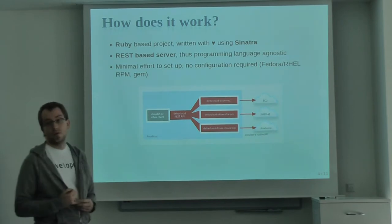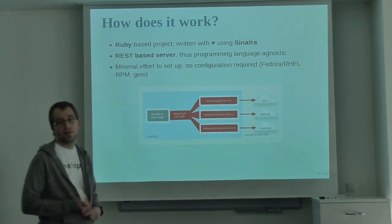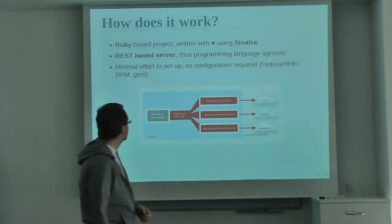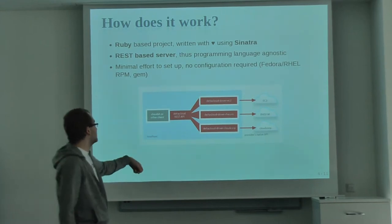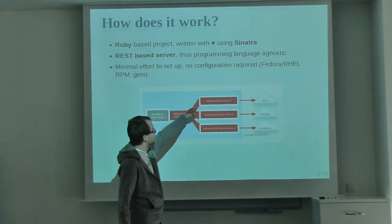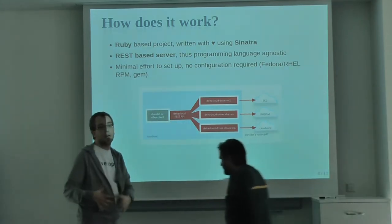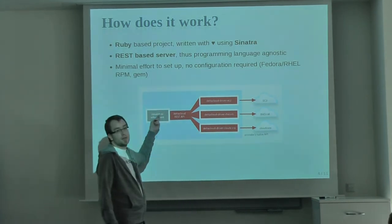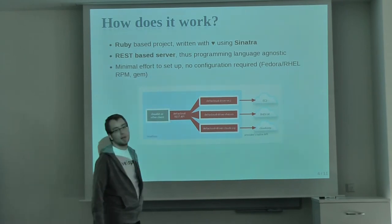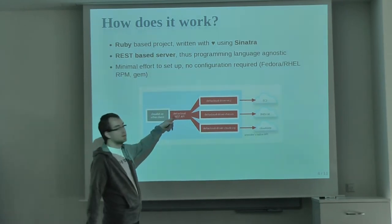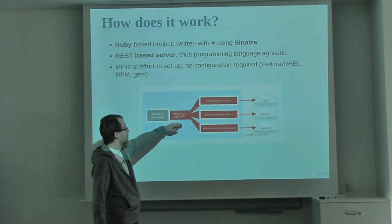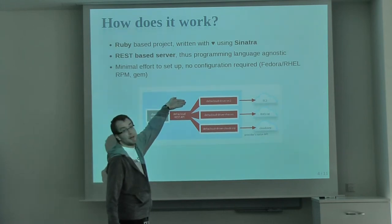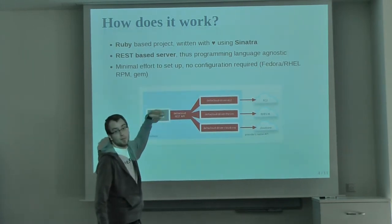We have a gem, so if you do 'gem install deltacloud-core', you have everything set up and can start using Delta Cloud without installing anything else. The REST API uses a set of drivers with a consistent API, and those drivers go to the backend provider. It's completely transparent to you as a cloud client. Actually, we now have not just one REST API — we also have the CIMI API and the EC2 API, so your client can decide which API to use.